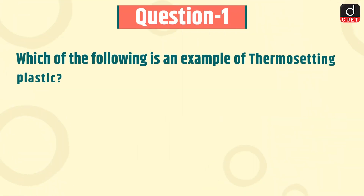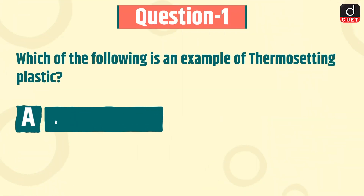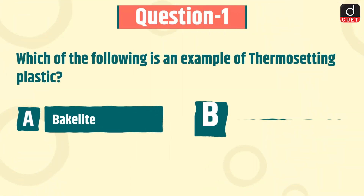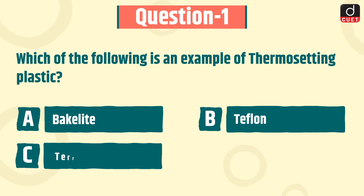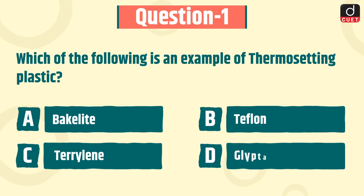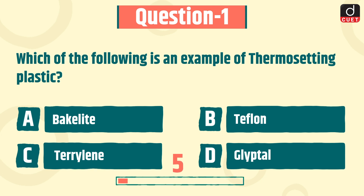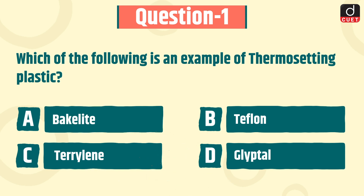Now let's begin today's session. The first question is: which of the following is an example of thermosetting plastic? Bakelite, Teflon, Terylene, or Glyptal? The correct answer is option A, Bakelite.